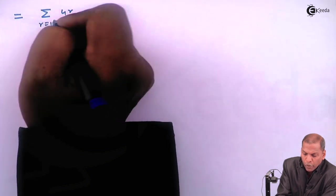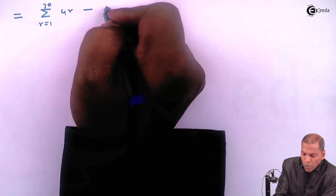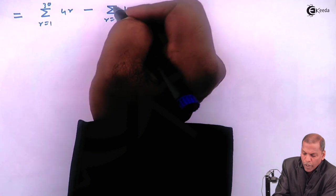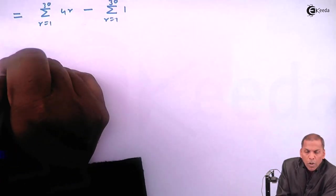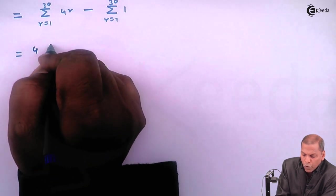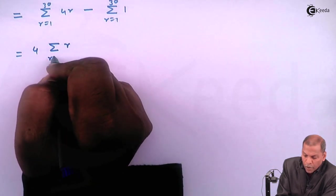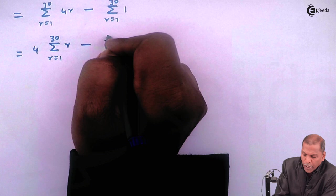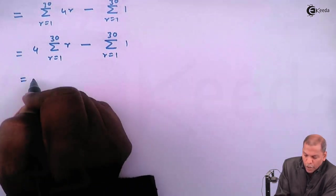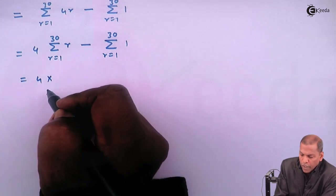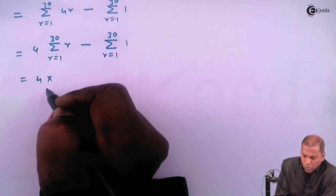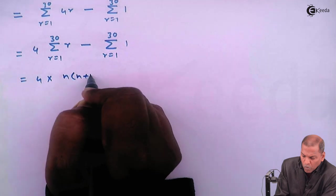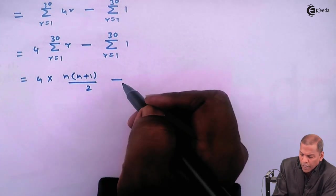The next step: this equals summation 4r for r from 1 to 30, minus summation 1 for r from 1 to 30. Since 4 is a constant term, we write it outside the summation notation: 4 times summation r for r from 1 to 30, minus summation 1 for r from 1 to 30. For summation r we write the formula n(n+1)/2, and for summation 1 we write the formula n.